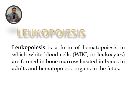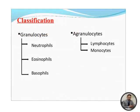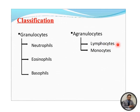Remember that whenever we study leukopoiesis, we must keep two things in mind. First, there are two types of cells based on granules. Granules are present in neutrophils, eosinophils, and basophils. The process in which neutrophils, eosinophils, and basophils are formed is known as granulopoiesis. The process in which lymphocytes and monocytes are formed is known as agranulopoiesis — where lymphocyte production is specifically called lymphopoiesis and monocyte production is called monocytopoiesis or monopoiesis.